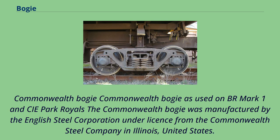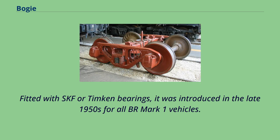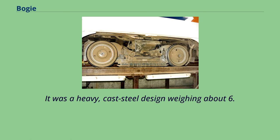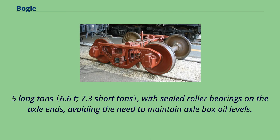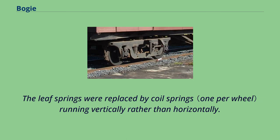The Commonwealth bogey is used on BR Mark 1 and CIE Park Royals. It was manufactured by the English Steel Corporation under license from the Commonwealth Steel Company in Illinois, United States. Fitted with SKF or Timken bearings, it was introduced in the late 1950s for all BR Mark 1 vehicles. It was a heavy cast steel design weighing about 6.5 long tons, with sealed roller bearings on the axle ends, avoiding the need to maintain axle box oil levels. The leaf springs were replaced by coil springs running vertically rather than horizontally.